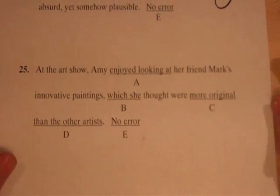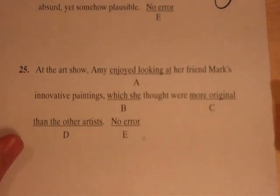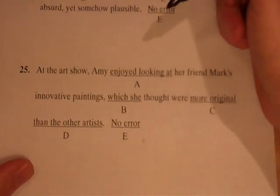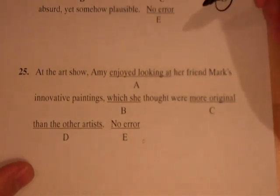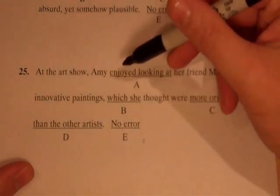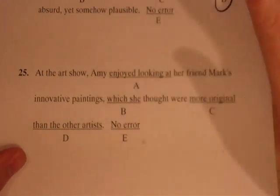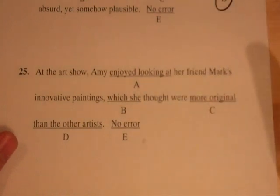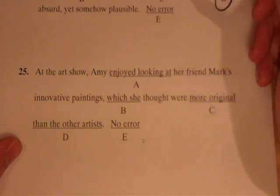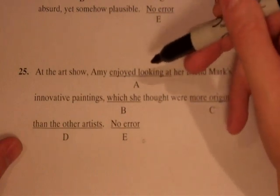Number 25. 'At the art show, Amy enjoyed looking at her friend Mark's innovative paintings, which she thought were more original than the other artists.' Again, ask yourself: do I recognize an error? Let's say I don't see one, so I go through each choice. 'Enjoyed looking at' — we have a verb, subject, nothing wrong. 'Which she thought were more original' — you might ask: is it 'that' or 'which'? The SAT does not test 'that' versus 'which,' so don't worry about it. We just need to worry about the pronoun 'she' — Amy, she thought, not 'her thought' — that's fine.